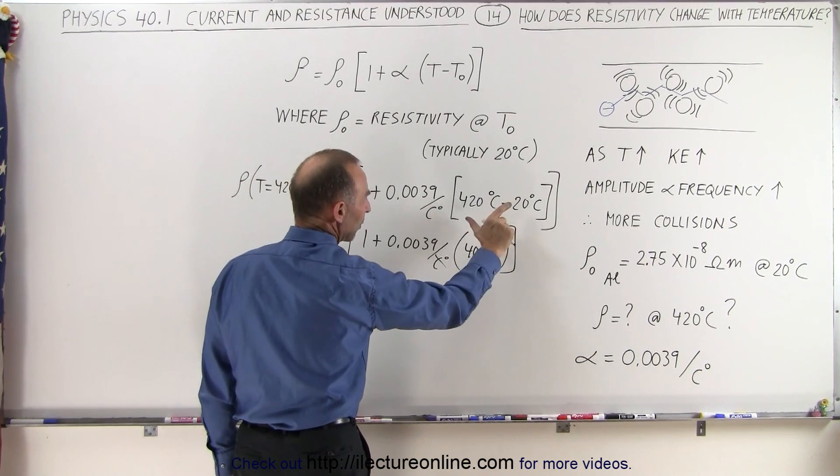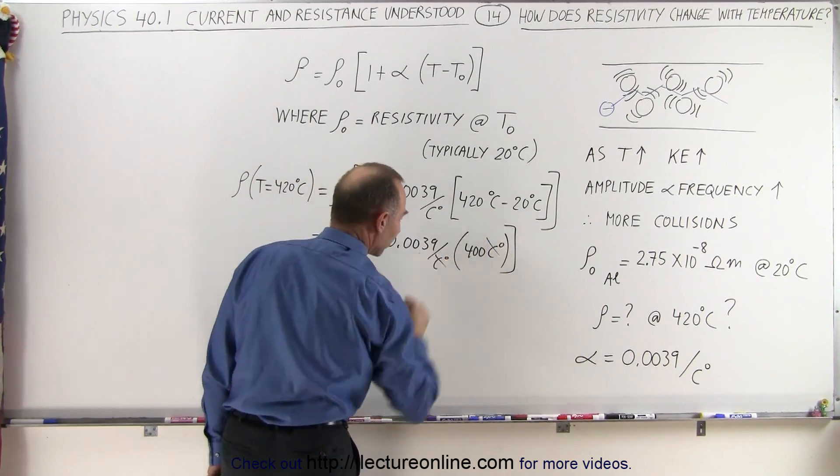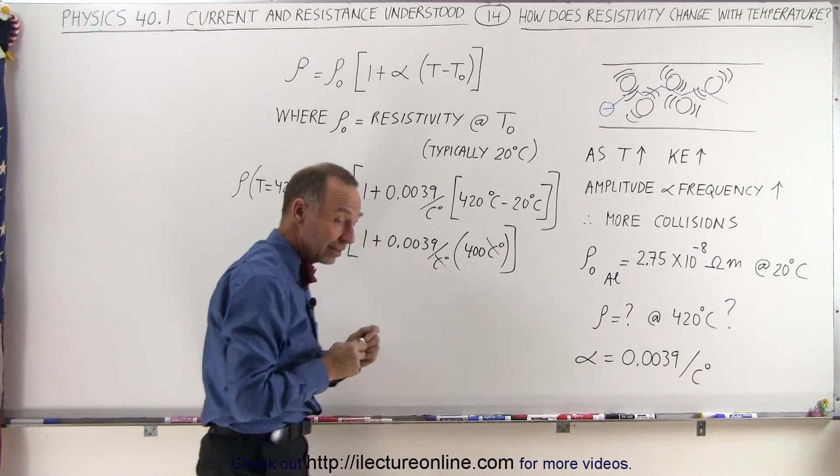And so now centigrade degrees can cancel out. Notice that we have degrees centigrade here, but when you take the difference, you end up with centigrade degrees, and now let's calculate that amount.